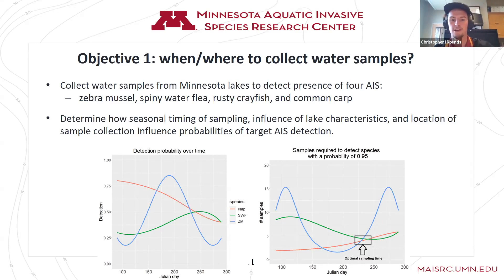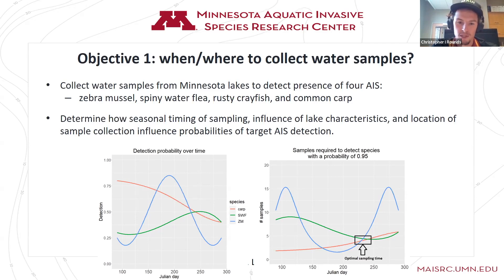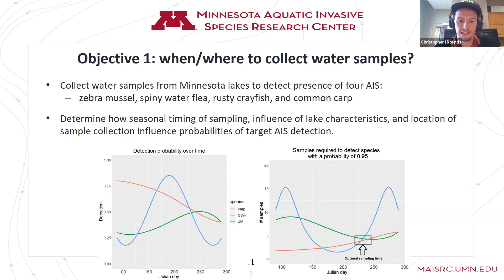You can see on these two figures — this is fake data, so take it as you will — but this is what we might expect for some of our aquatic invasive species. Looking at this red line, we have carp where they slowly decrease in our ability to detect them over time. We think this is because carp spawn in the spring, so earlier in the year they're more detectable, and then throughout the year they become less detectable.